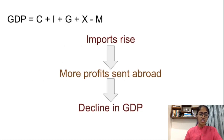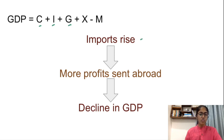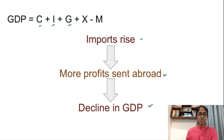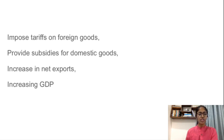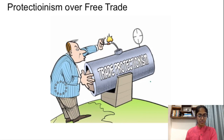We know GDP is composed of four components: consumption, investment, government spending, and net exports. Now if imports rise, more profits are sent abroad and there's a decline in GDP. So with this we see that a country should adopt trade protectionism.